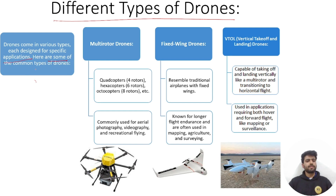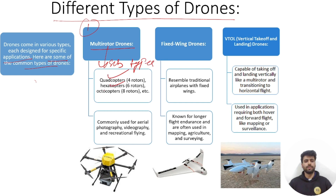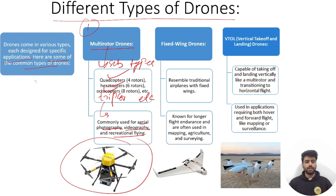There are different types of drones designed for different applications. The first type is multirotor drones, which include quadcopters, hexacopters, octocopters, and tricopters. They are commonly used for aerial photography, videography, and recreational flying. A hexacopter, for example, has six rotors.